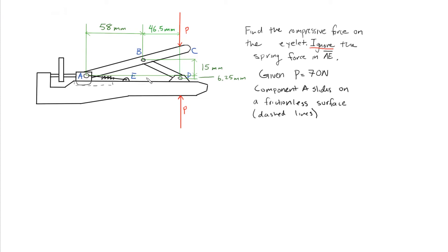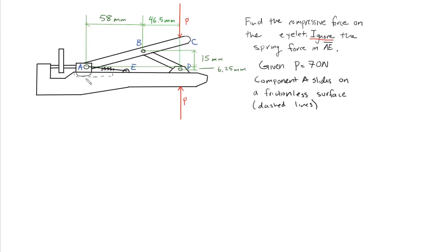This is our first machine example problem and our goal is to find the compressive force being applied on this eyelid. We can ignore the small spring, so don't draw it in your diagram. The first thing we're going to do is draw the free body diagram of this machine, which means we'll break it into various parts and use Newton's third law when applying the forces on these various free body diagrams.